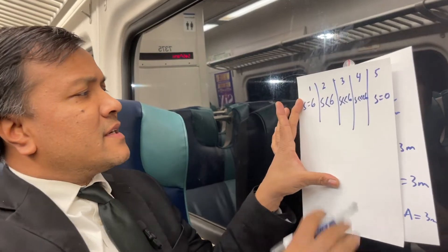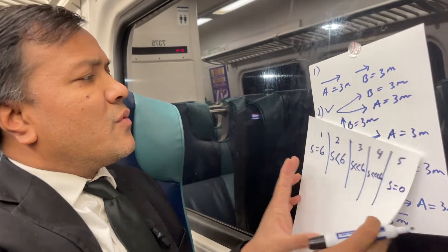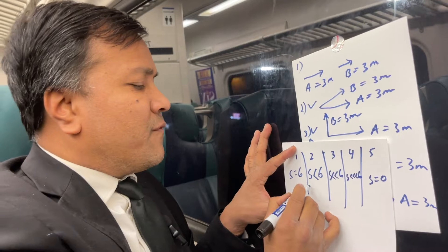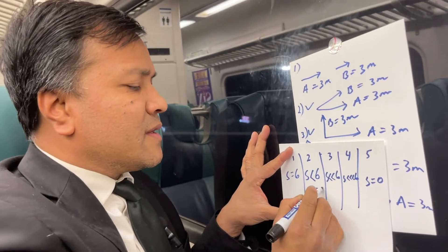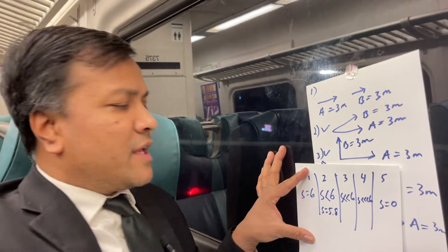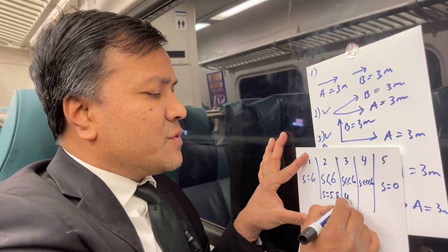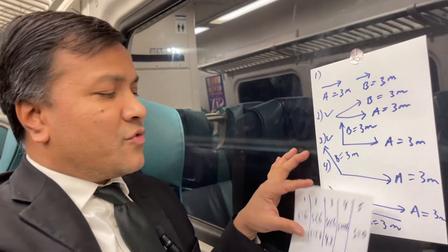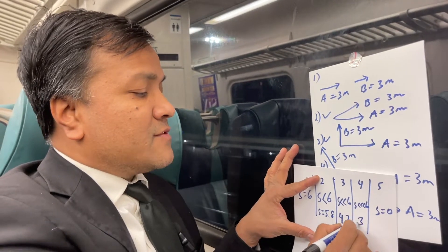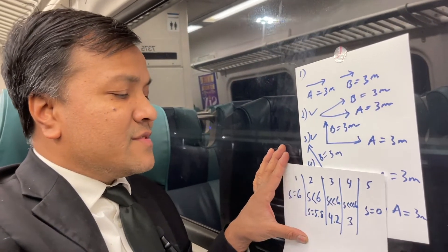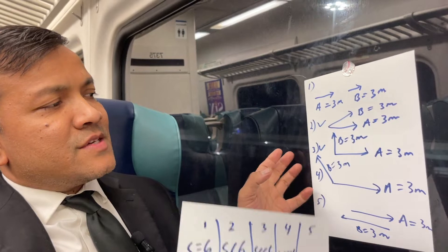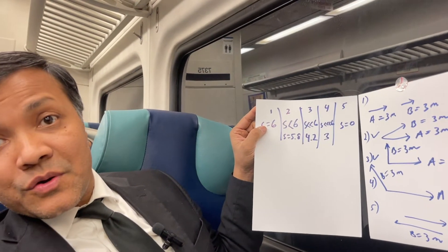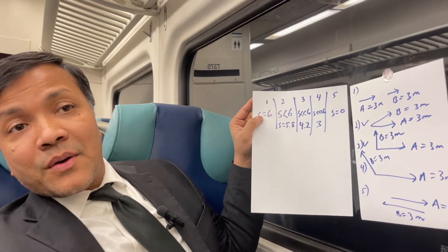In fact, scenario one is six, scenario two is going to be 5.8, scenario three is going to be 4.2, scenario four is going to be 3, and scenario five is zero. So this is what you're going to get, and that's what I'm going to show you how and why.